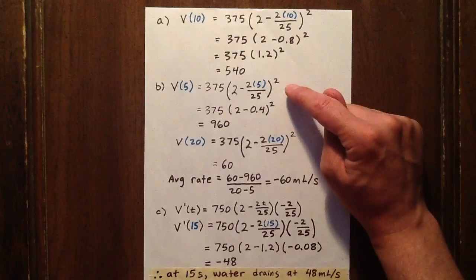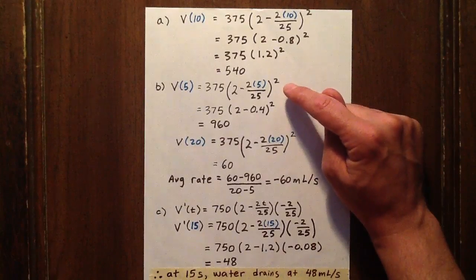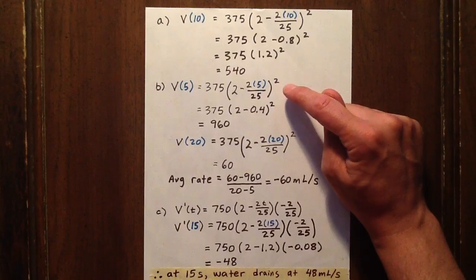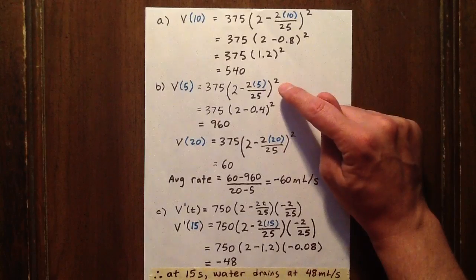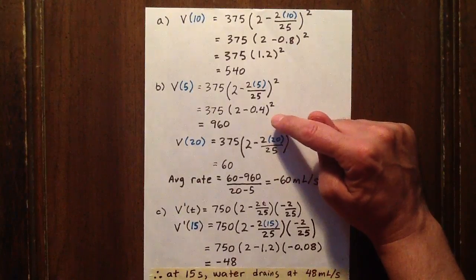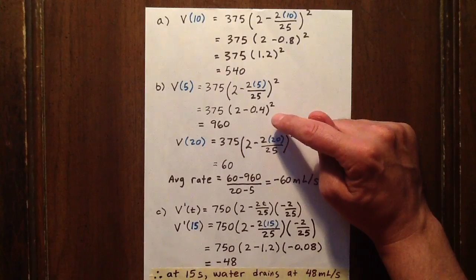The next question is relatively straightforward, although it may not appear as such at first. We want to know the average rate of change between 5 and 20 seconds. So we're going to figure out how much water is left in the cup after 5 seconds, and in this case, it's 960 milliliters.